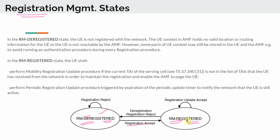If you are in a registered state and you keep renewing your registration — in 5G there are scenarios where you have to re-register, similar to the tracking area update process in 4G. In 5G this is called a periodic registration update, and as long as your registrations are successful, you will remain in the registered state.